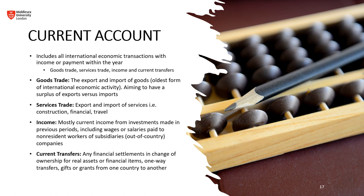Services trade is the export and import of services such as construction, financial, or travel. Income refers mostly to current income from investments made in previous periods, including wages or salaries paid to non-resident workers or subsidiaries abroad. Current transfers are any financial settlements involving a change of ownership for real or financial assets — one-way transfers, gifts, or grants from one country to another. All these components are important for understanding how you'll transact as a global entrepreneur.